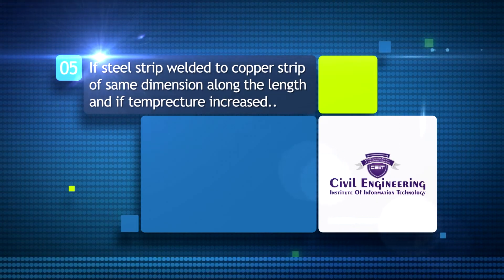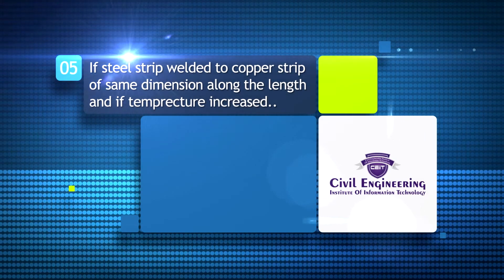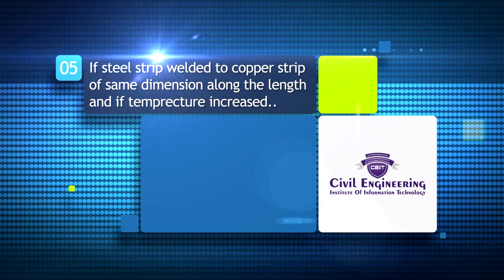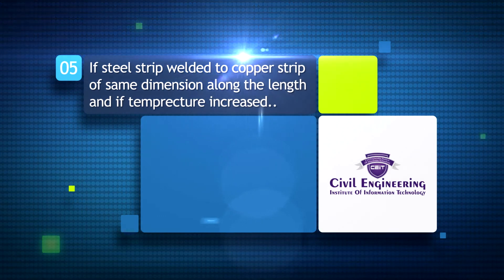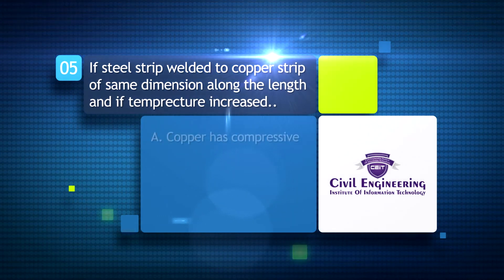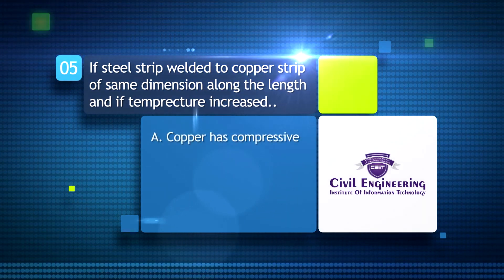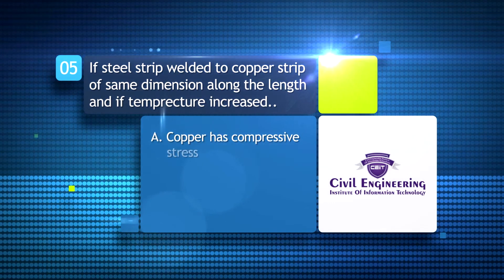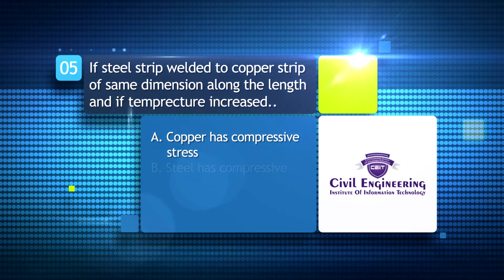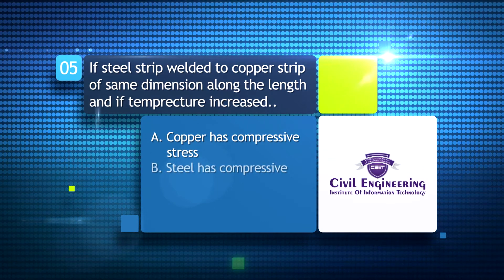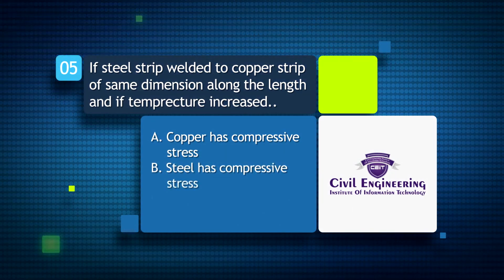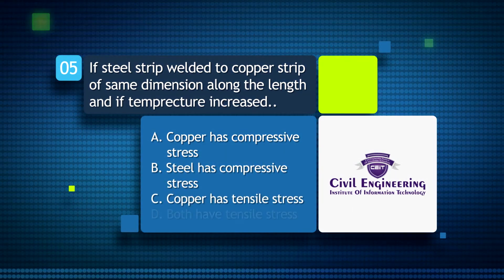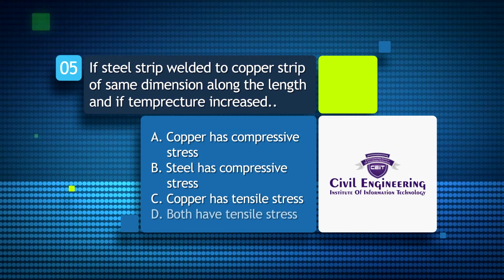If a steel strip is welded to a copper strip of the same dimensions along the length, and the temperature is increased: A) copper has compressive stress, B) steel has compressive stress, C) copper has tensile stress, D) both have tensile stress.